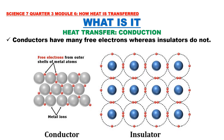Why is it that conductors conduct heat easily while insulators do not? Conductors have many free electrons whereas insulators do not. The outer electrons of the atoms are loosely bound and free to move about through the material. These free electrons make the transfer of heat very easy. While in insulators, most atoms hold on to their electrons, so the electrons are not free to move about through the material. This is the reason why conductors are better in transferring heat than insulators.